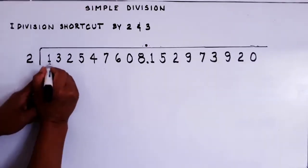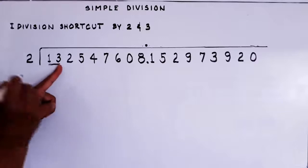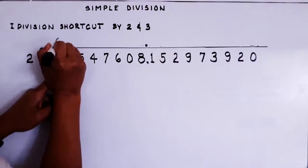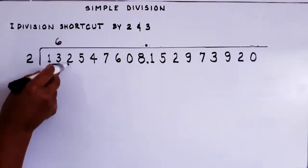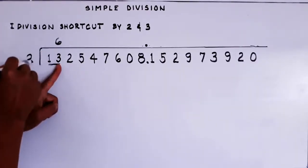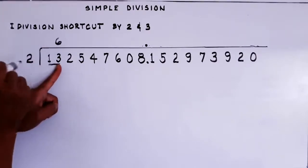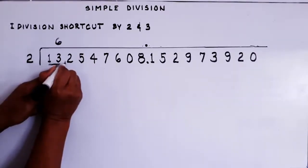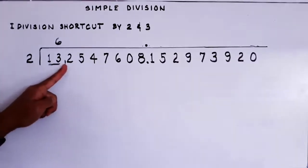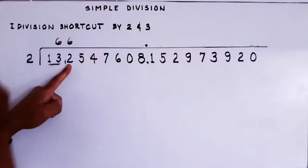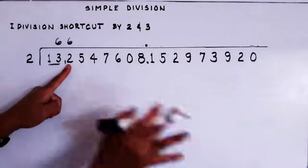Now it's 13. We divide 13 by 2 — that gives 6, so we put 6 above the 3, not above the 1 or the 2, but above the 3. When we divide 13 by 2, two times 6 is 12, and there is a remainder of 1. We put that remainder 1 right here next to the 2. So the 2 becomes 12. We can now divide 12 by 2 — that is exact, so we put 6 above it. Six times two is 12, so no remainder.